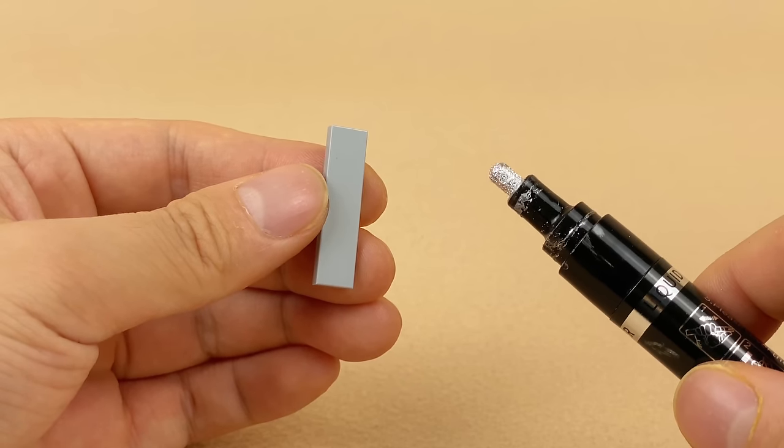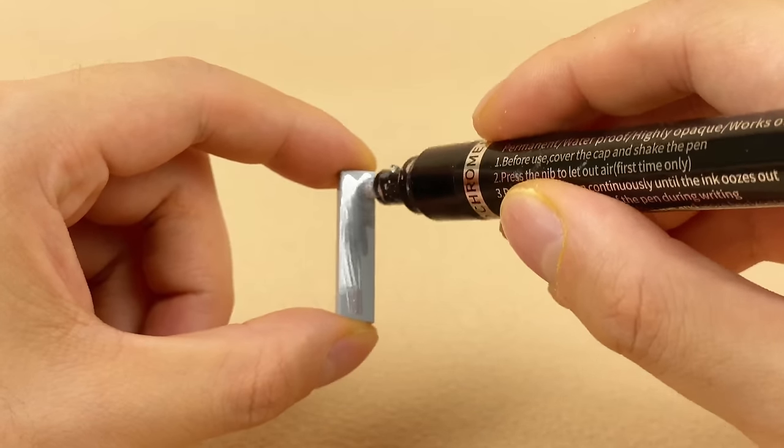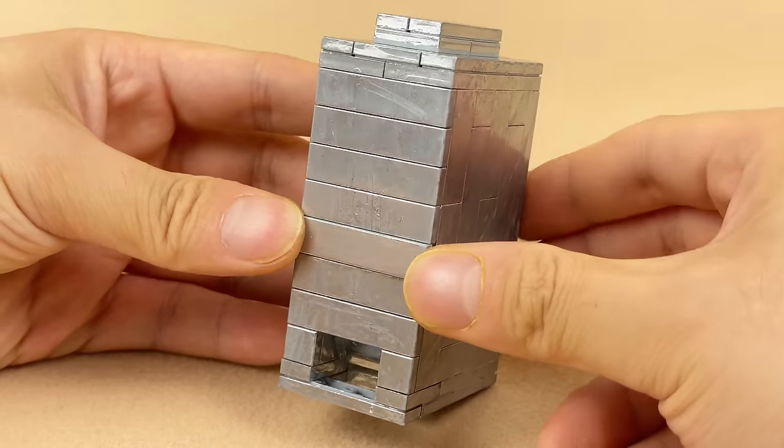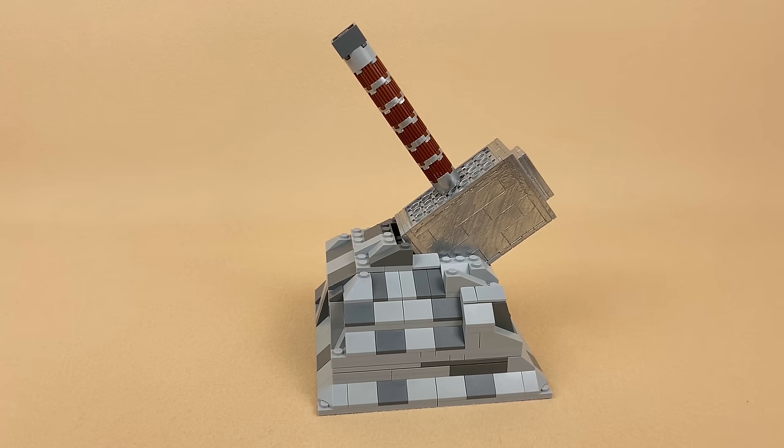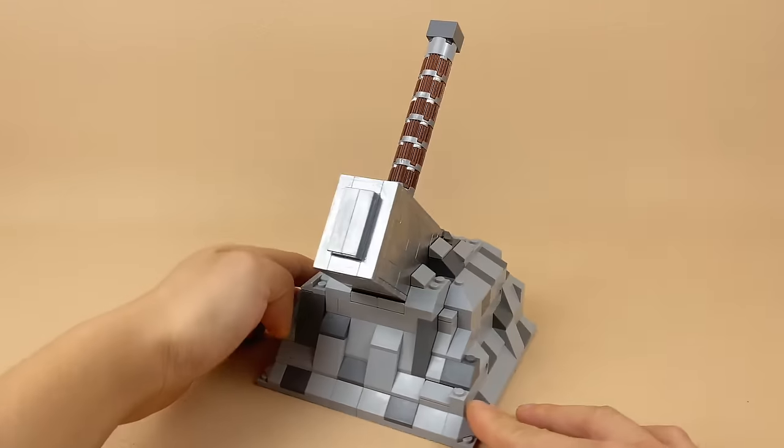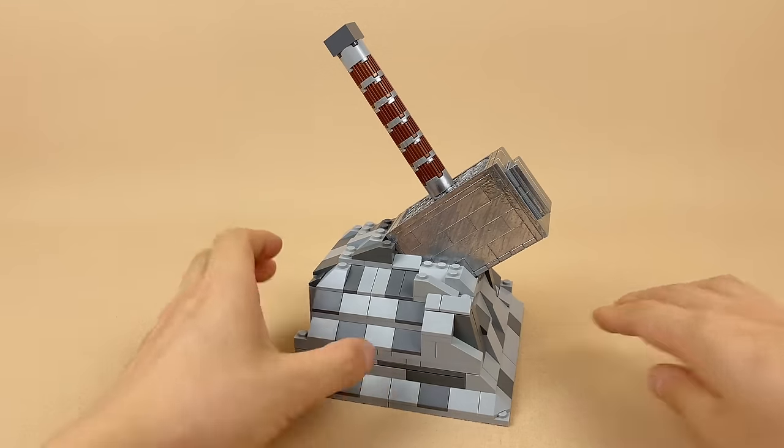This is the last puzzle, but I assure you this is the most complicated one. First, I used a silver paint marker to give Lego tiles a metallic look, and I built Thor's armor. I locked the armor to a base made out of Lego bricks, and the only way to get the armor is through these steps.